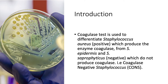In the medical laboratory, when we isolate Staphylococcus, Staphylococcus aureus is considered the medically important or pathogenic bacteria, whereas Staphylococcus epidermidis and Staphylococcus saprophyticus are considered least pathogenic. So we have to determine whether Staphylococcus aureus is present in the sample. We can separate Staphylococcus aureus from other Staphylococcus species by performing the coagulase test.